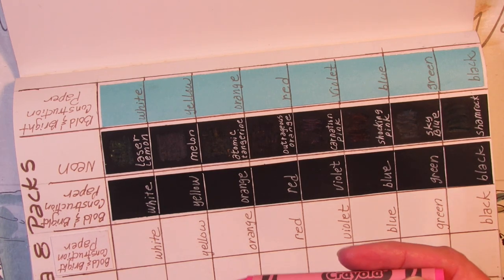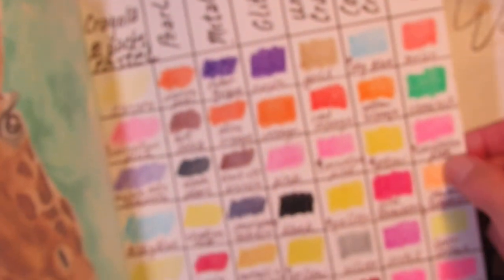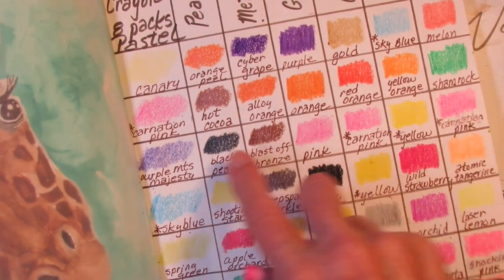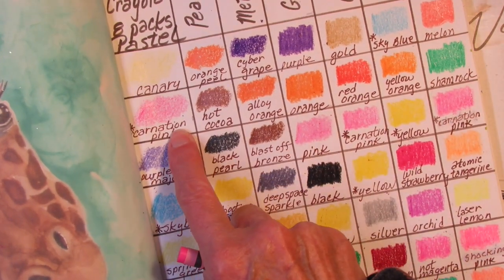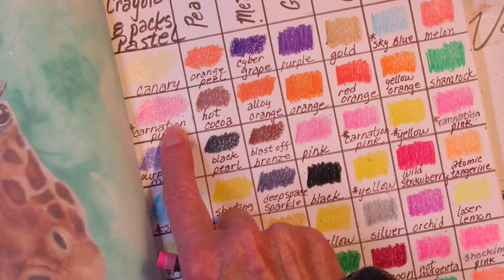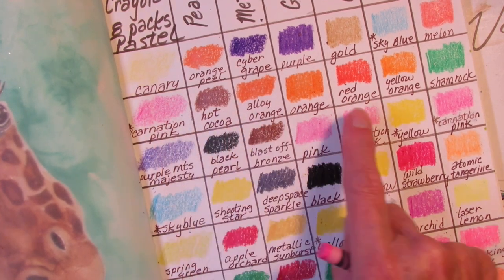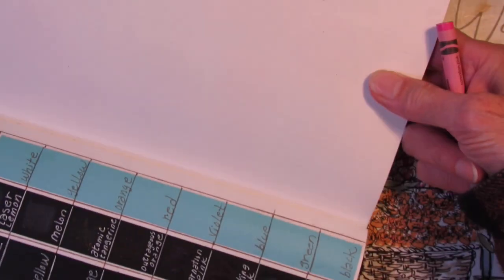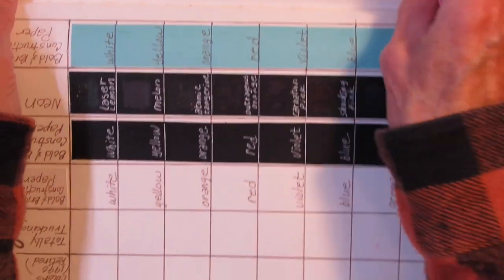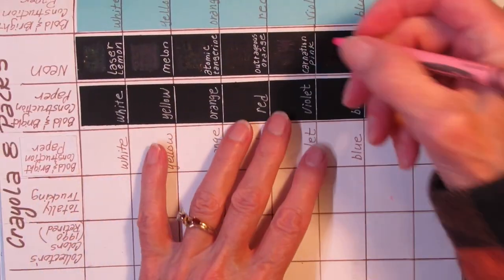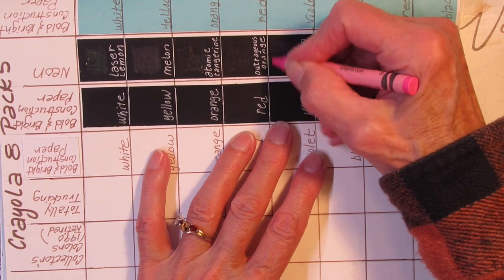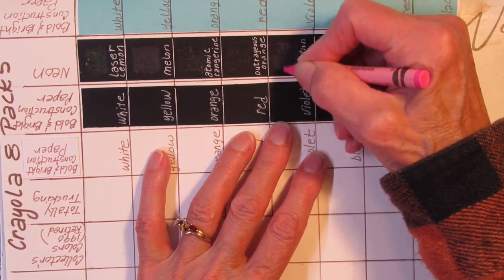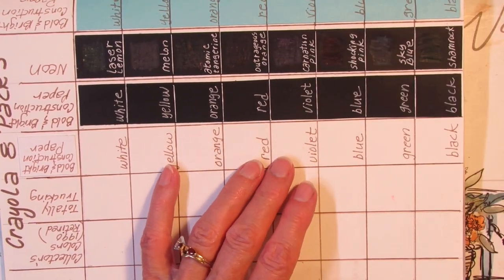Next one is Carnation Pink. Now Carnation Pink is, I know I'm zoomed out, it's also in the pastel pack. Now how it can be a pastel and in the uni crayons and in the neons at the same time, I don't know. They're calling it a pastel and a neon. Is it a neon pastel? Don't know. Okay. That's that.